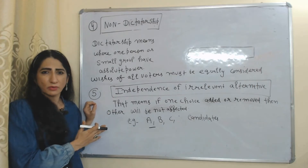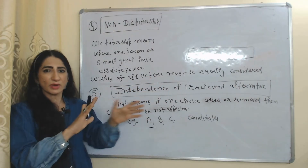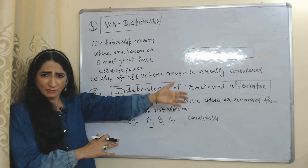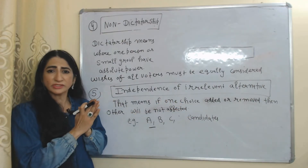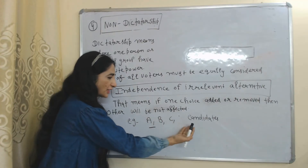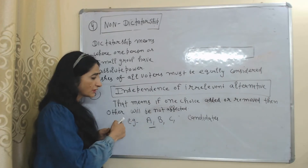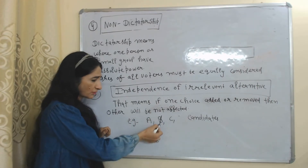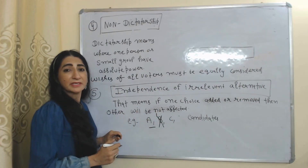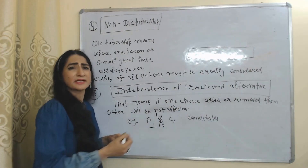The fifth condition is independence of irrelevant alternatives. This means if one choice is added or removed, other choices will not be affected. For example, with candidates A, B, and C — if we add candidate D or remove candidate B, the other candidates should not be affected. But in real life, this is not possible; adding or removing a candidate will definitely affect others.